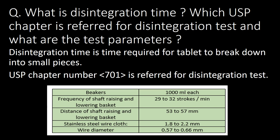What is disintegration time, which USP chapter is referred for disintegration test, and what are the test parameters? Disintegration time is the time required for tablets to break down into small pieces. USP chapter number 701 is referred for the disintegration test. Key parameters: beakers of 1000 mL each; frequency of shaft raising and lowering basket — 29 to 32 strokes per minute; distance of raising and lowering — 53 to 57 mm; stainless steel wire cloth mesh — 1.8 to 2.2 mm; and wire diameter — 0.57 to 0.66 mm.